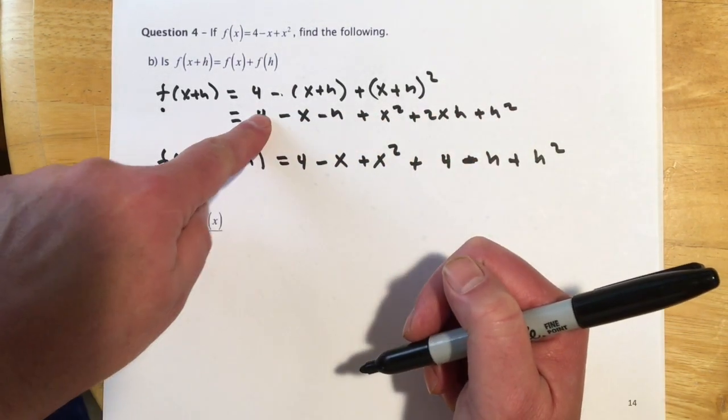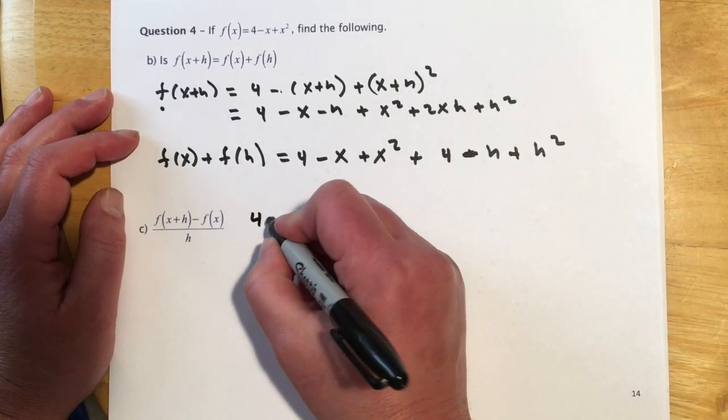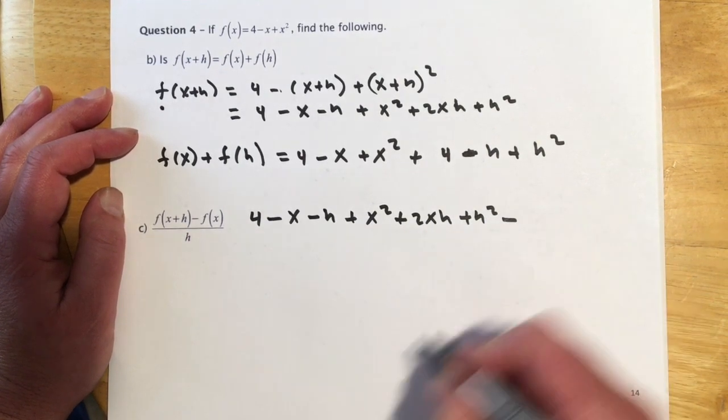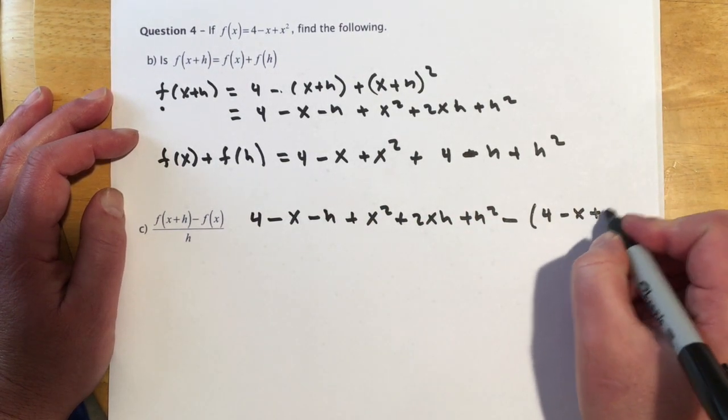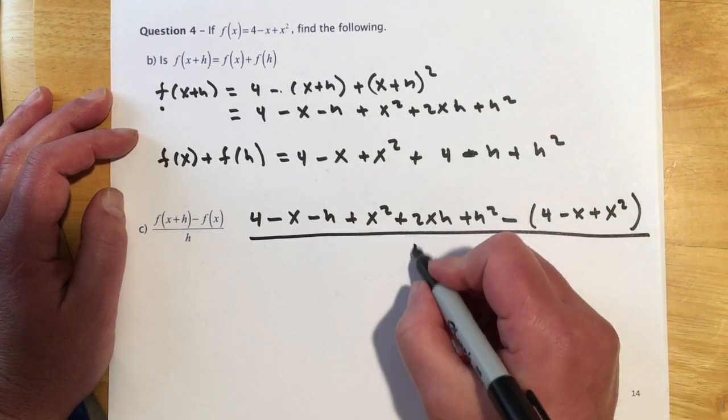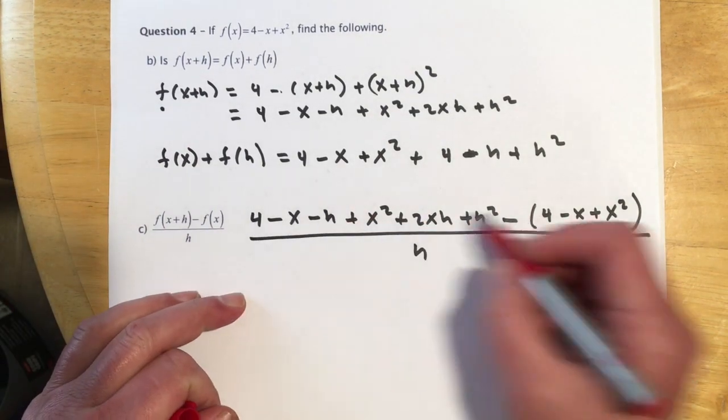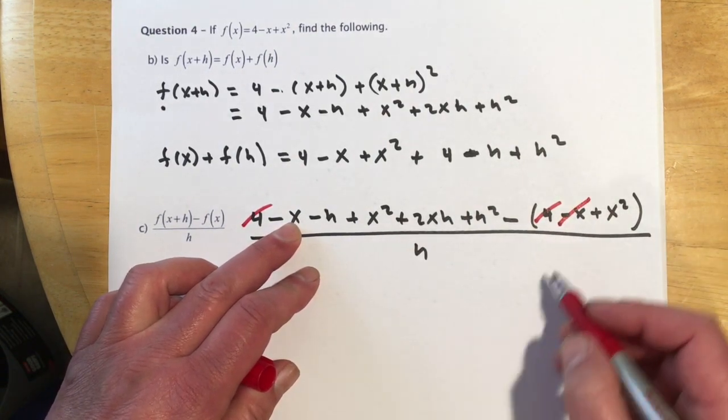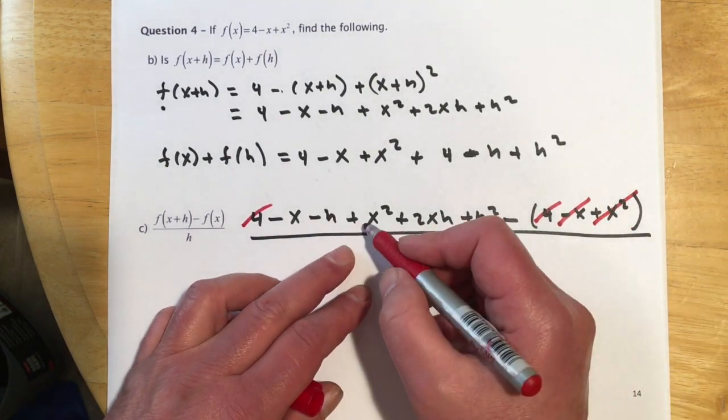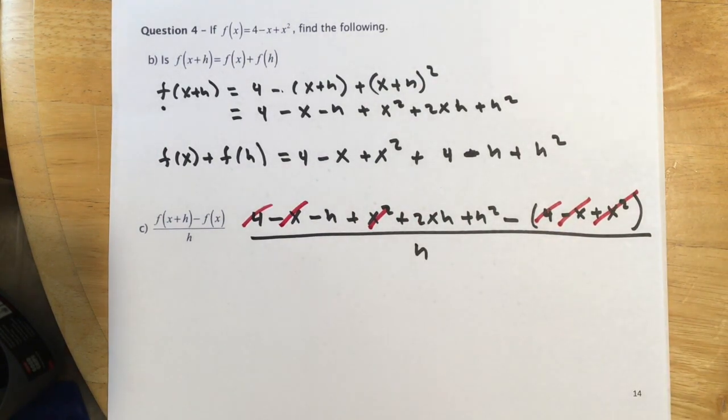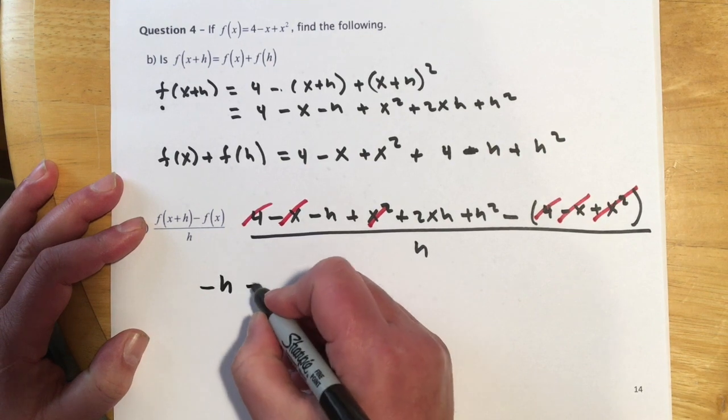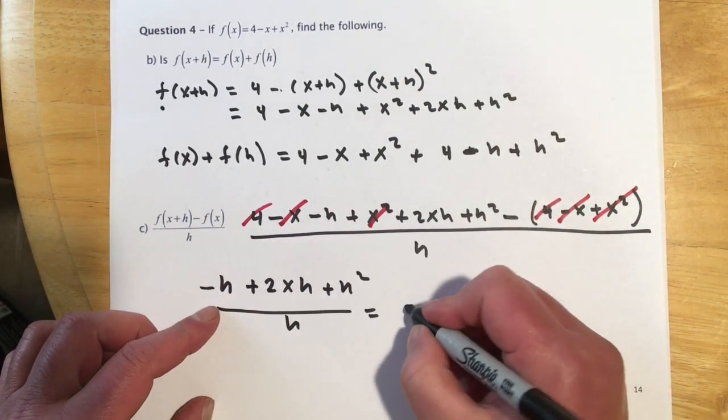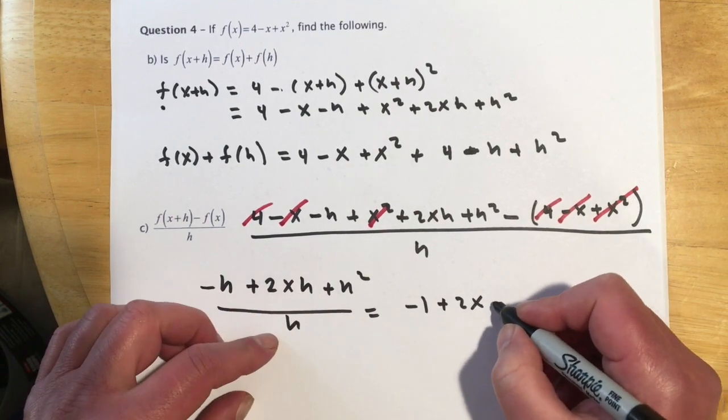And then this is that difference quotient again. So we'll go ahead and copy our work from up here, because we already have that. So that's going to be 4 minus x minus h plus x squared plus 2xh plus h squared. And then we're going to subtract from that f of x. Again, that should all cancel if all goes well, over h. So we have 4 minus 4, so that's gone. We have negative x minus a negative x, so that would become plus x, so that's gone. And then we have x squared minus x squared, so that's gone. And so that leaves negative h plus 2xh plus h squared over h. h goes into h once, so careful not to just cancel that. It's a negative 1, and then plus 2x plus h.